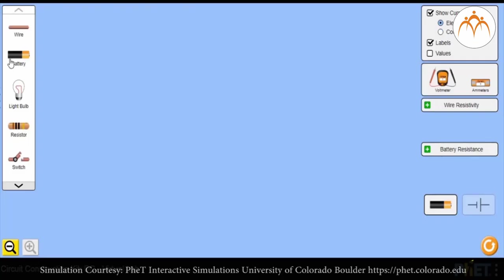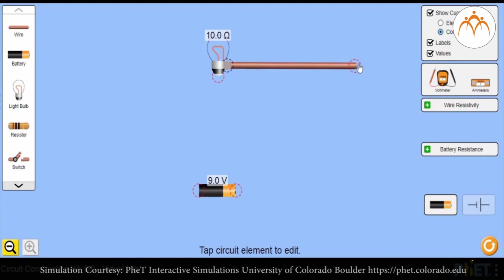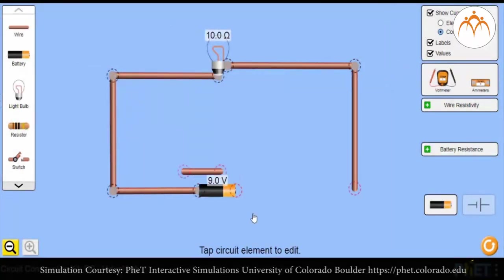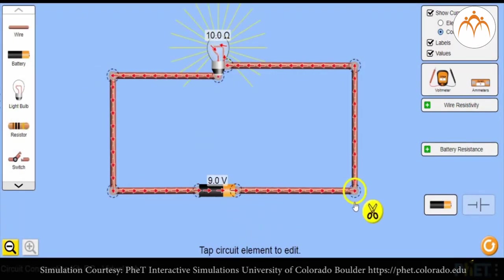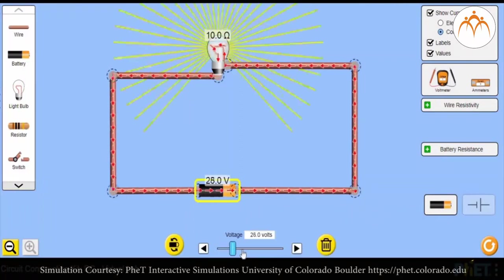We will use PhET simulation to understand circuit behavior using basic components. The tray on the left has components which can be dragged into the main area to build a circuit. Let's build a simple circuit by dragging battery and bulb. We will connect these using wires. When the circuit is completed, the bulb glows. Observe the intensity of the bulb when battery voltage is changed.